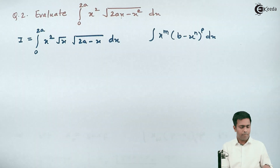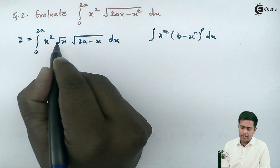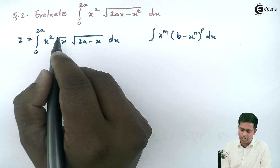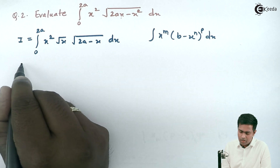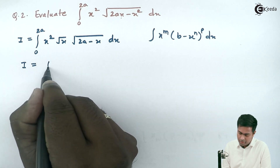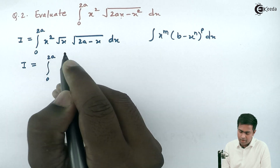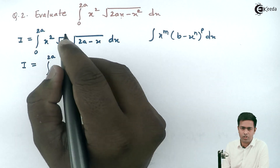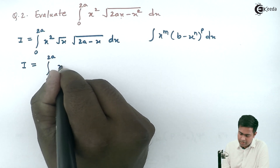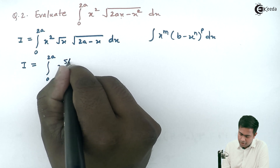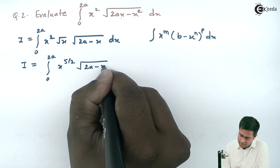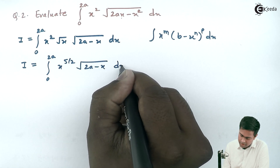Now root x is nothing but x raised to 1/2. So this becomes i equal to integration from 0 to 2a of x raised to (1/2 + 2), which is x raised to 5/2, times the square root of (2a minus x) dx. So now this integration is matching with the standard form.